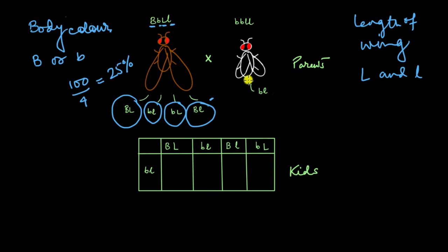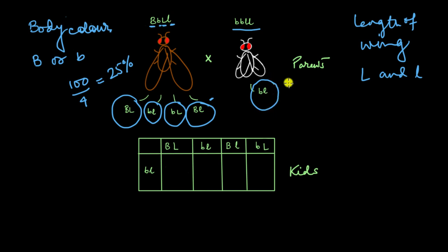Now let's see what type of gamete the black fruit fly is going to form. In its genotype there are no dominant genes at all, only recessive ones. So no matter what combination it tries to make, it will always form one type of gamete: small b and small l. So no matter what kind of combination you try to carry out with the genes in this black fruit fly, it will always give this specific gamete.